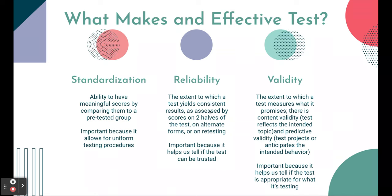Reliability is the extent to which a test yields consistent, similar results. It's assessed by scores on two halves of the test, on alternate forms, or on retesting. It's important because it tells us if the test can be trusted — just like a reliable friend you can count on. If a test isn't reliable, what's the point?